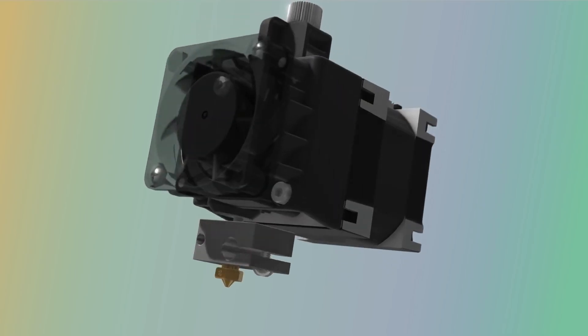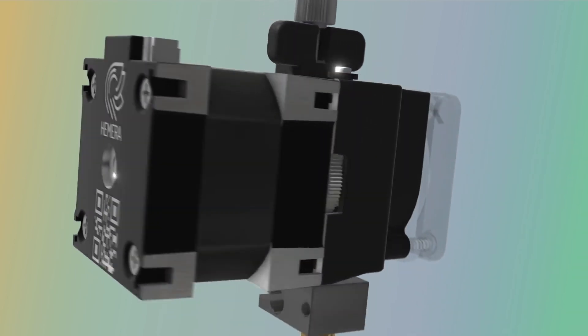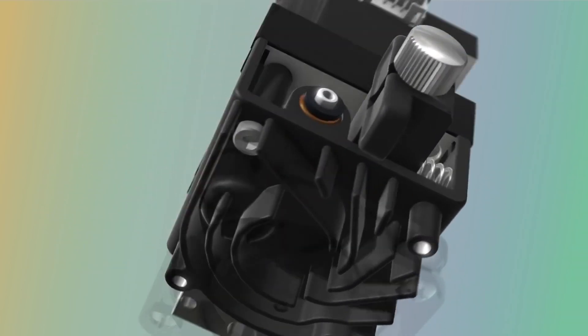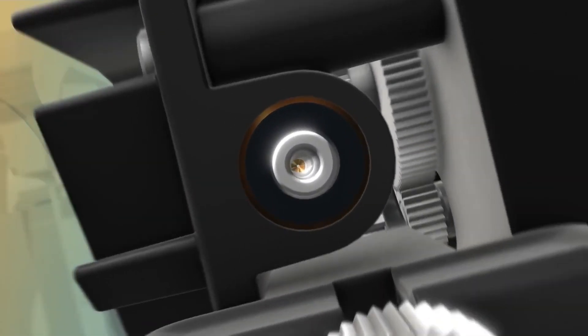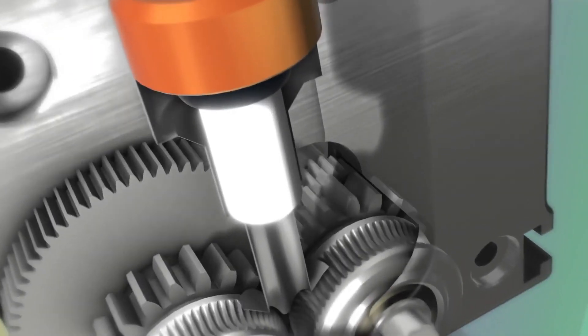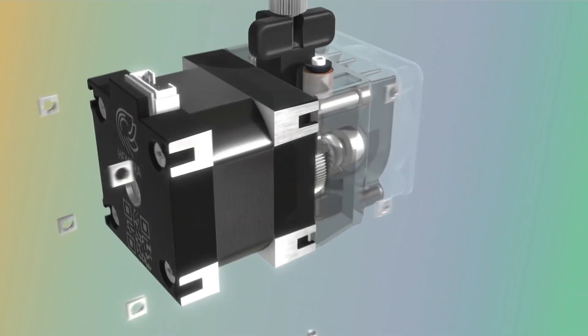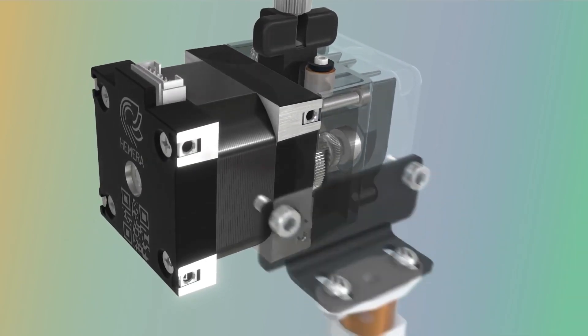That brings us to the pinnacle of E3D's extruders, the Hemera. A precision machined, compact, dual drive extruding powerhouse. Filament is constrained even further and with an adjustable tensioner, you can tune the Hemera for rigid and flexible materials alike. But what really brings these features all together is the user-friendly mounting points for easy integration, no matter the 3D printer you are modifying.